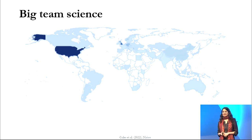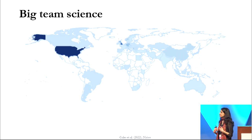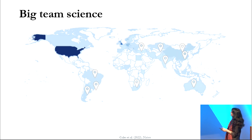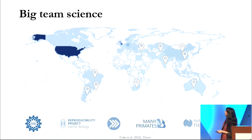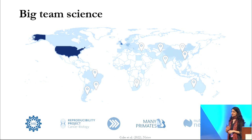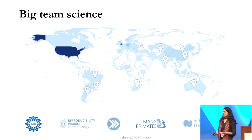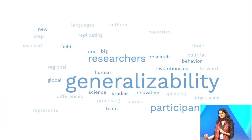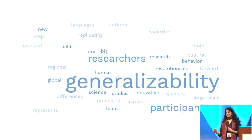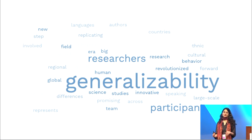Now, to switch gears a little bit, I want to show you this map, which doesn't look as bleak as the map before. Big team science studies are a new revolutionary methodological approach where a large distributed researcher network around the world comes together to collaborate and collect data, and has really meaningfully increased the diversity of research samples from Latin America to Asia to South Africa. This is spanning across disciplines from cancer biology to primate research to animal research, addressing issues of replication, power, and representing diverse cultures.